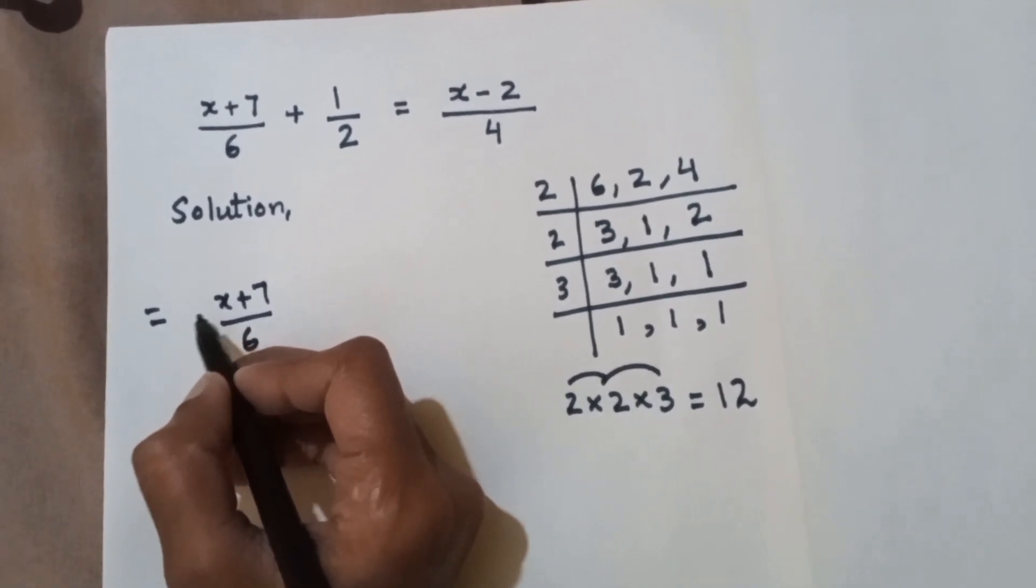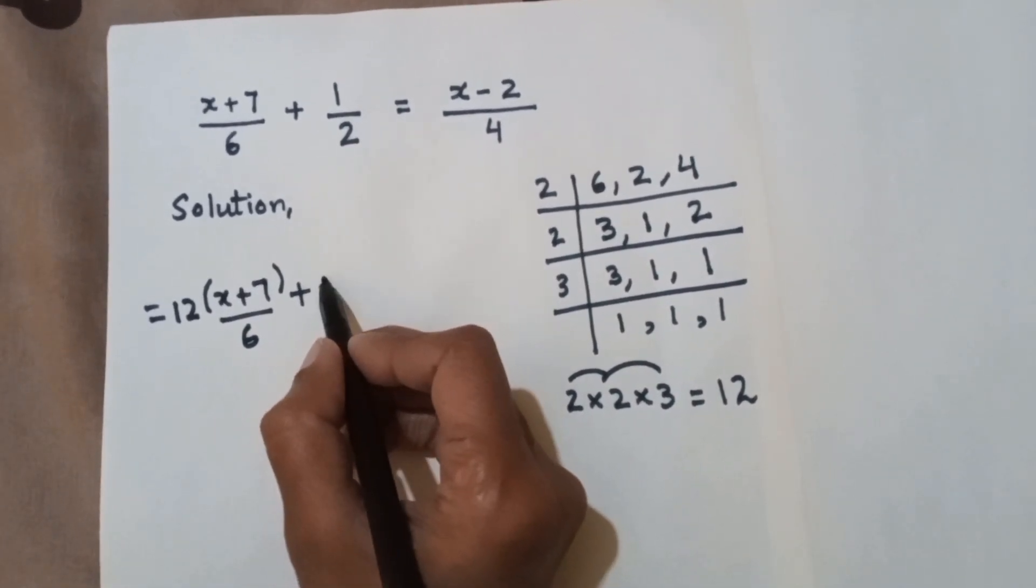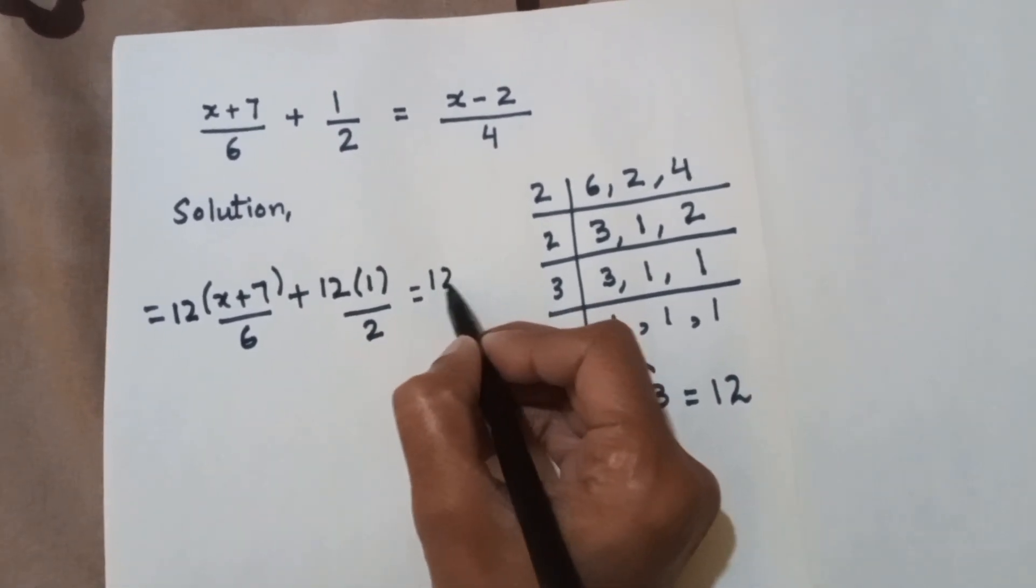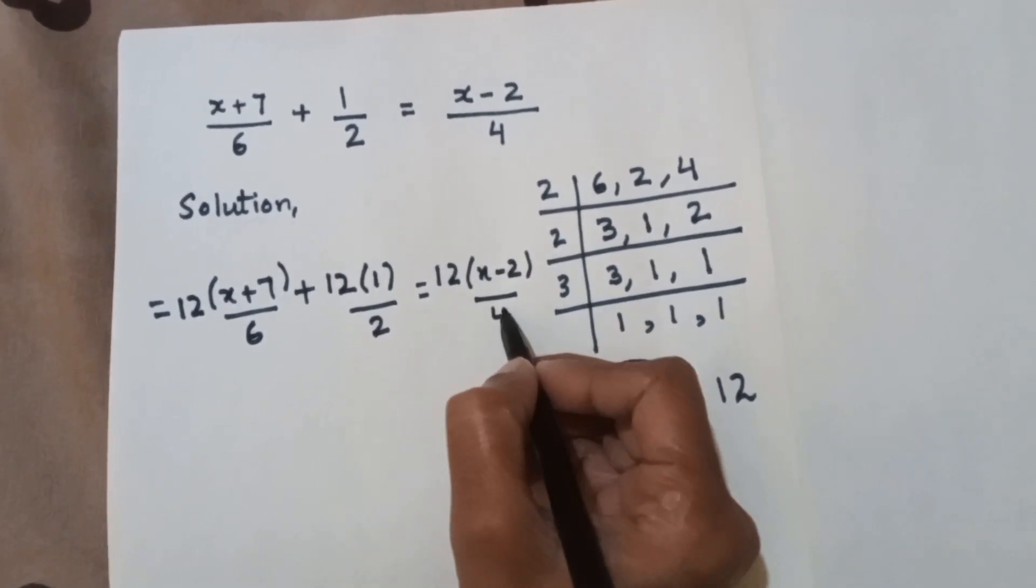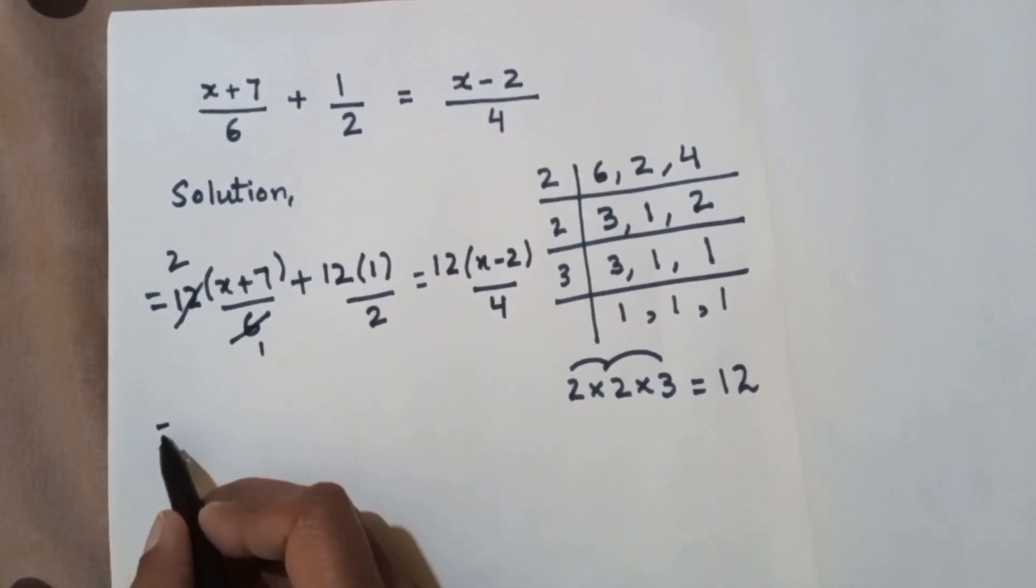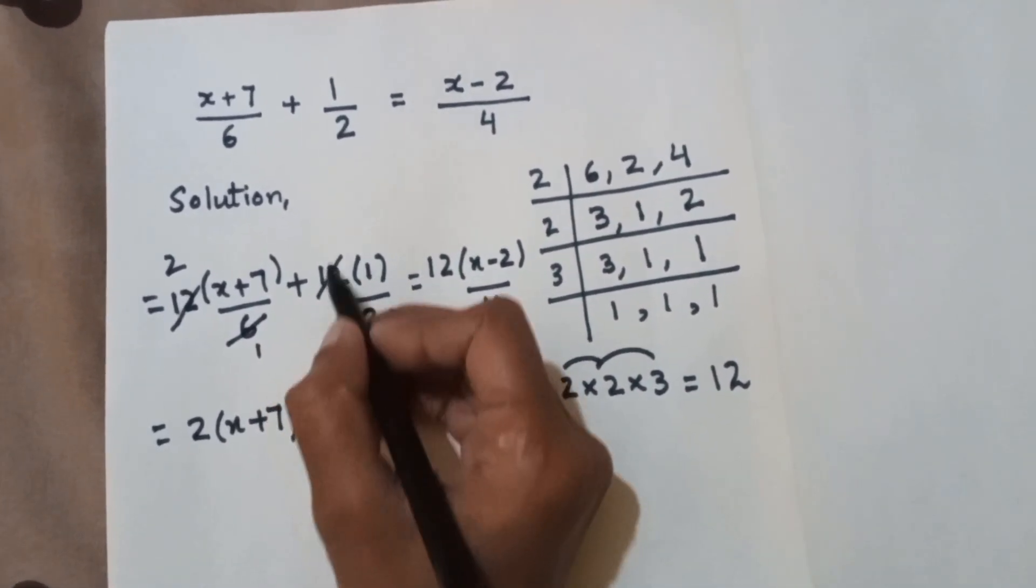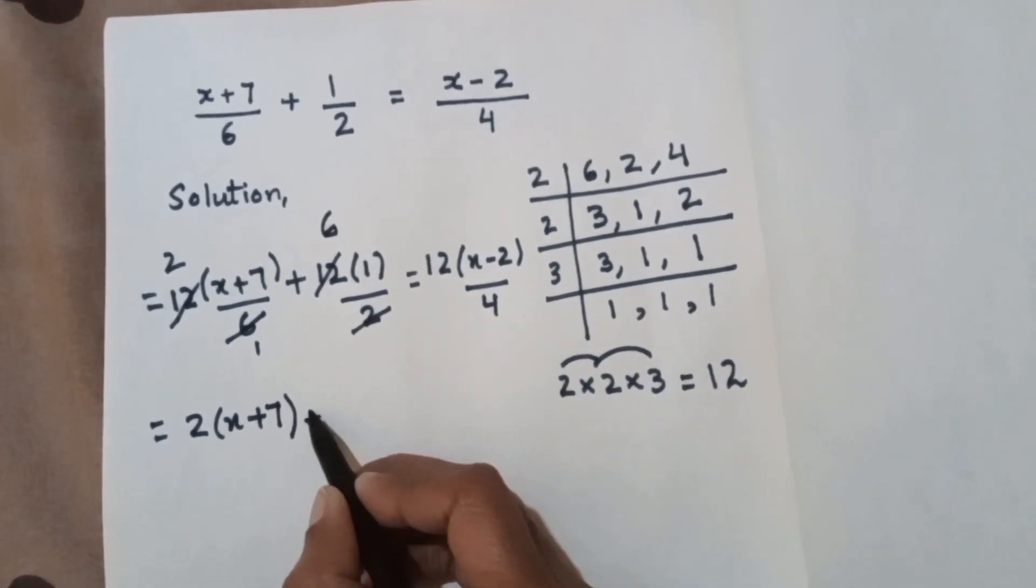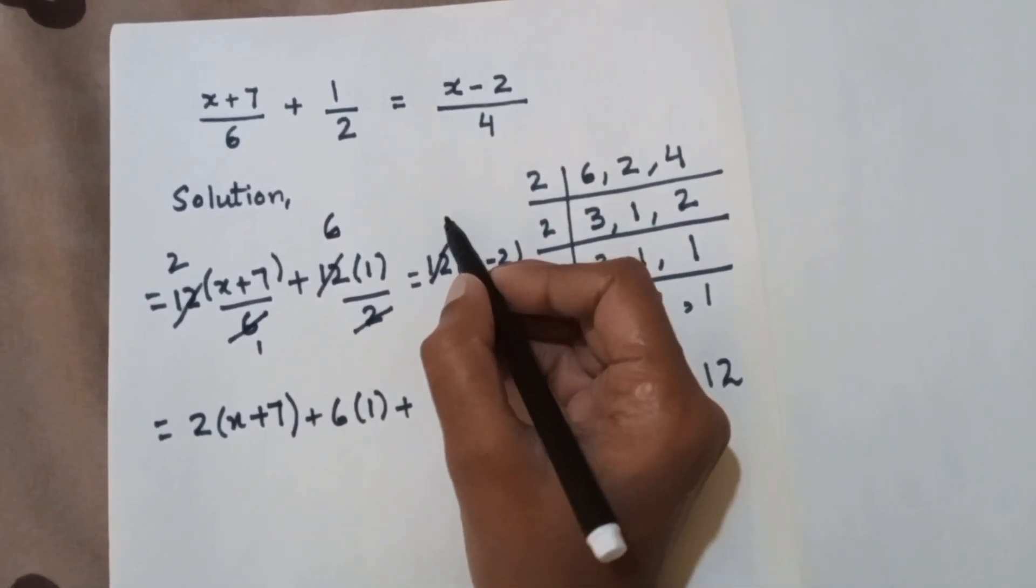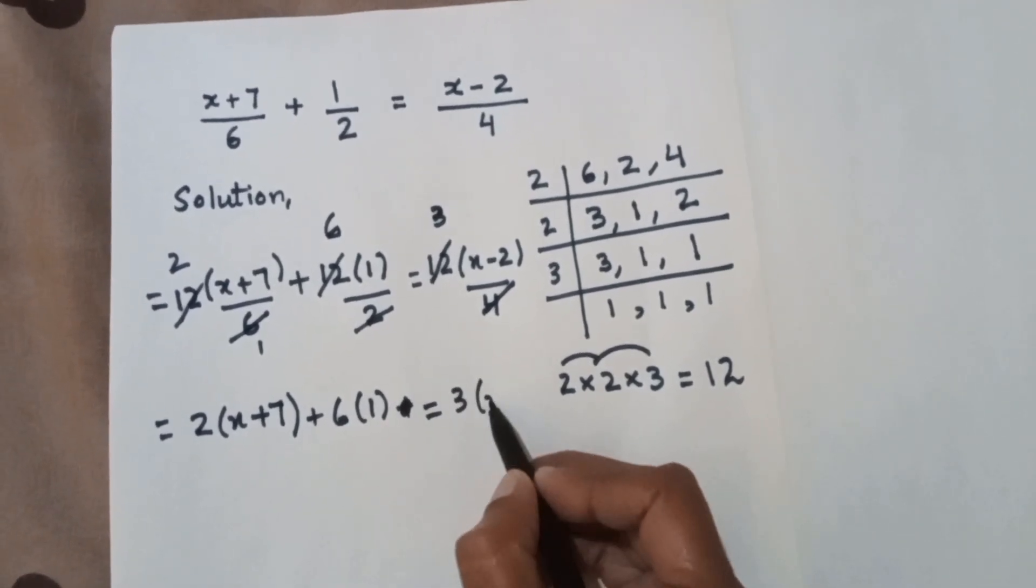We have to multiply by twelve. 2's are 12 so remaining 2 and bracket x plus 7, then plus 2 1's are 2 and 2 6's are 12 so here you have 6 and bracket 1, then is equal to. Now you have done 4 1's are 4, 4 3's are 12 and here bracket x minus 2, so I have written 3 and bracket x minus 2.